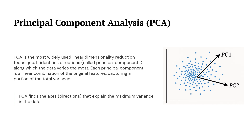Each principal component is basically a new feature made by combining the original features in a smart way. The first component captures the most variance, and the second one captures the next highest, and so on. In simple words, PCA finds the best directions that explain the most variation in the data, making it easier to analyze and visualize complex datasets.